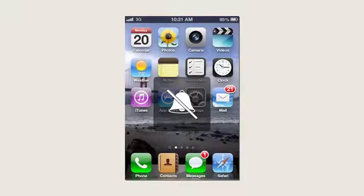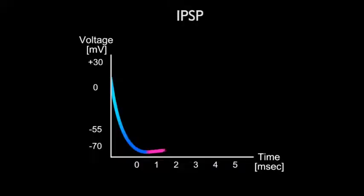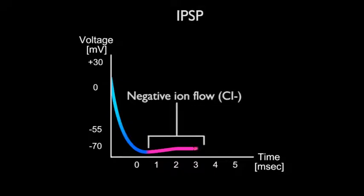The flow of negative ions, such as chloride, into the resting neuron, or the flow of positive ions, such as potassium, out of the neuron, will result in hyperpolarization.